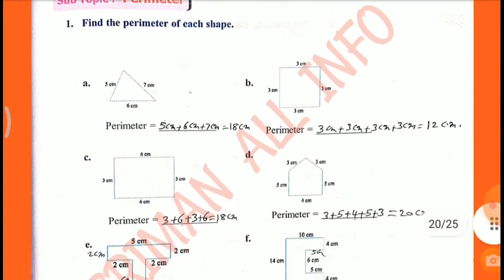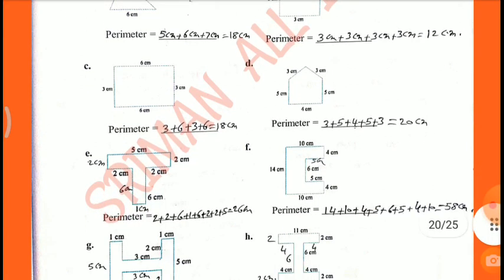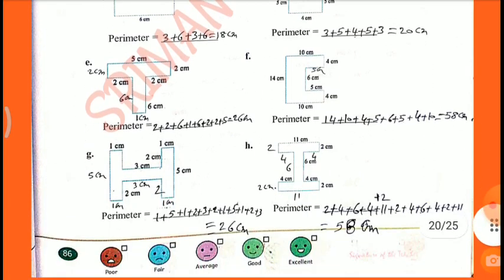Find the perimeter of each shape. First: perimeter equals side A plus side B plus side C — 5 cm plus 6 cm plus 7 cm equals 18 cm. B: perimeter is 3 plus 3 plus 3 plus 3 equals 12 cm. C: perimeter is 3 plus 6 plus 3 plus 6 equals 18 cm. D: perimeter equals 3 plus 5 plus 4 plus 5 plus 3 equals 20 cm.